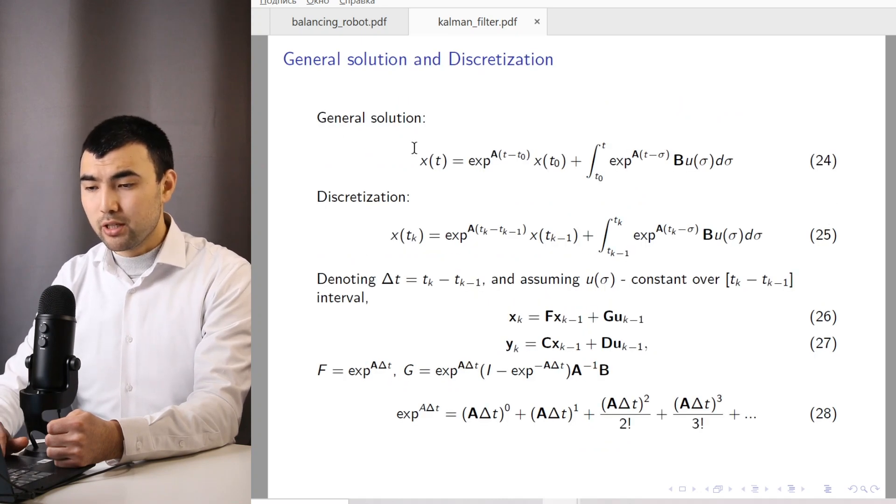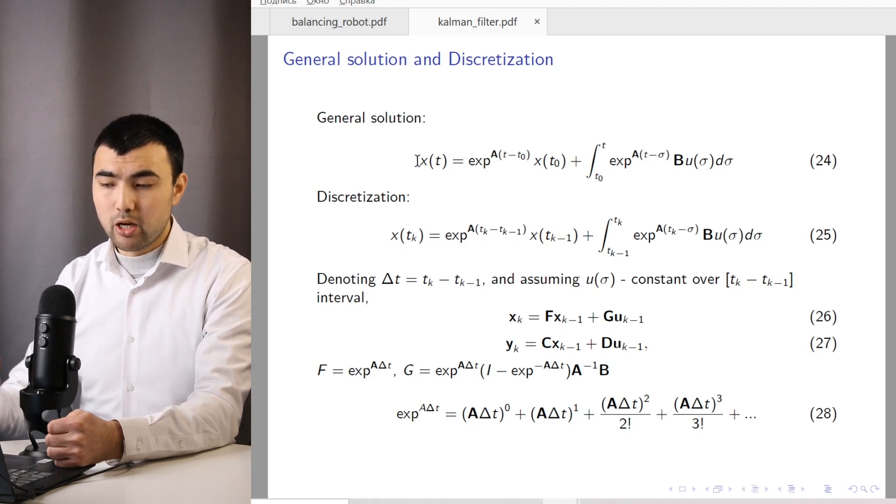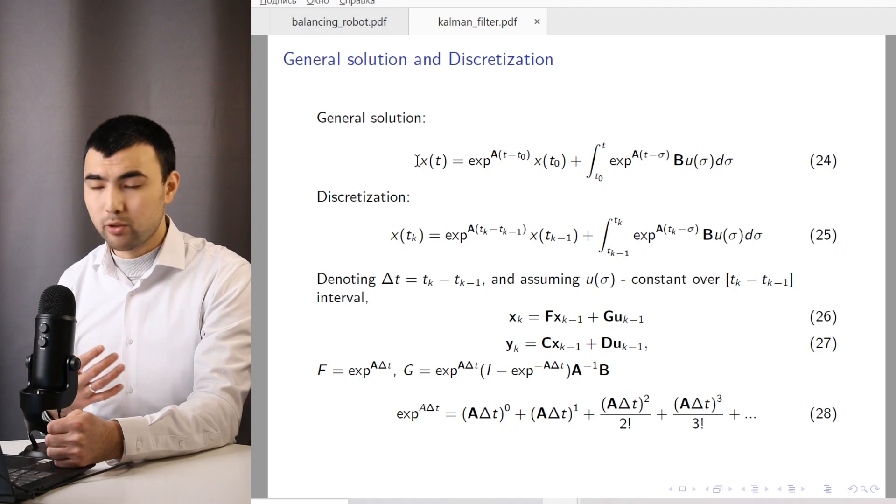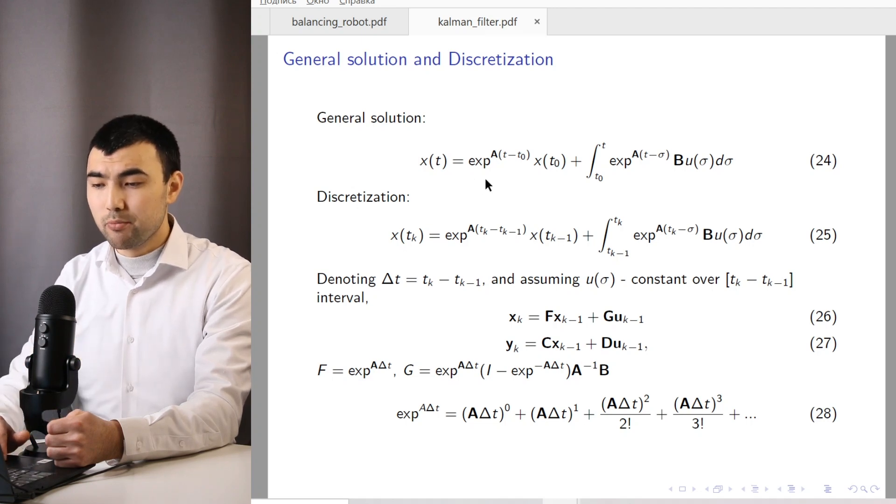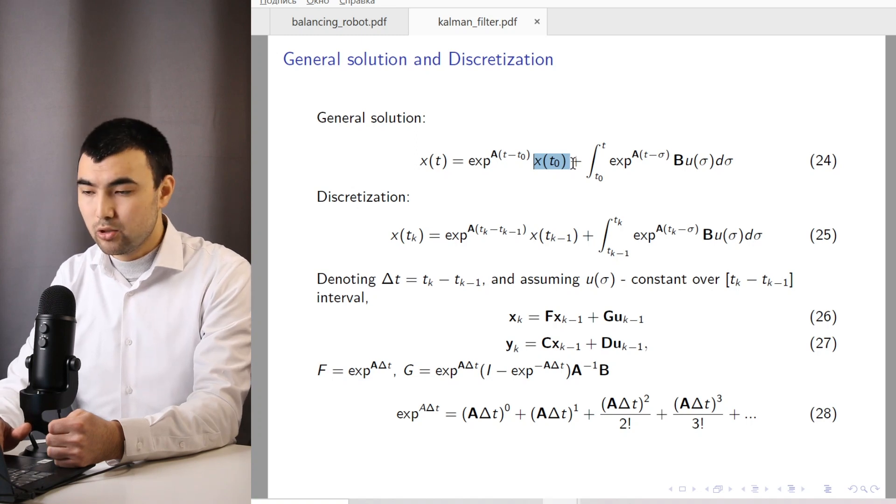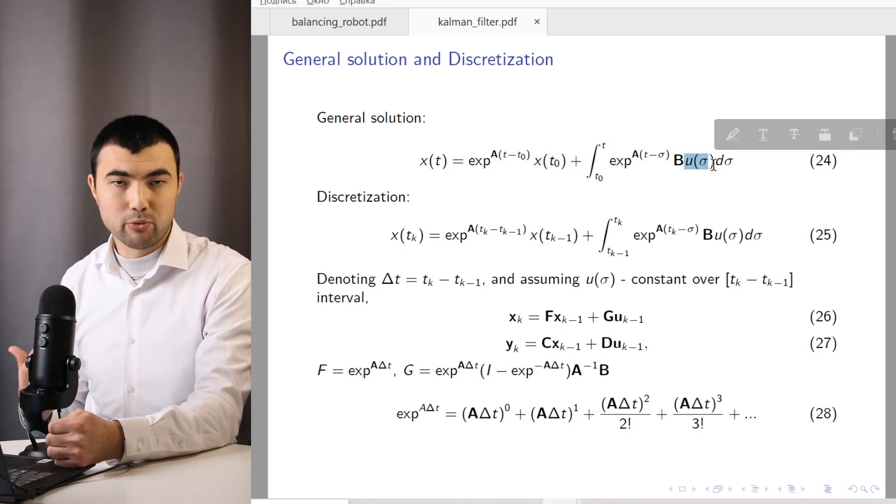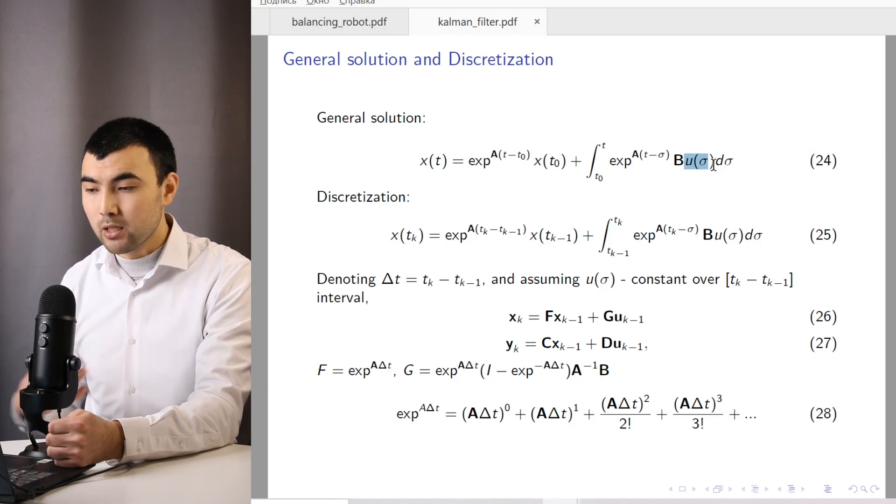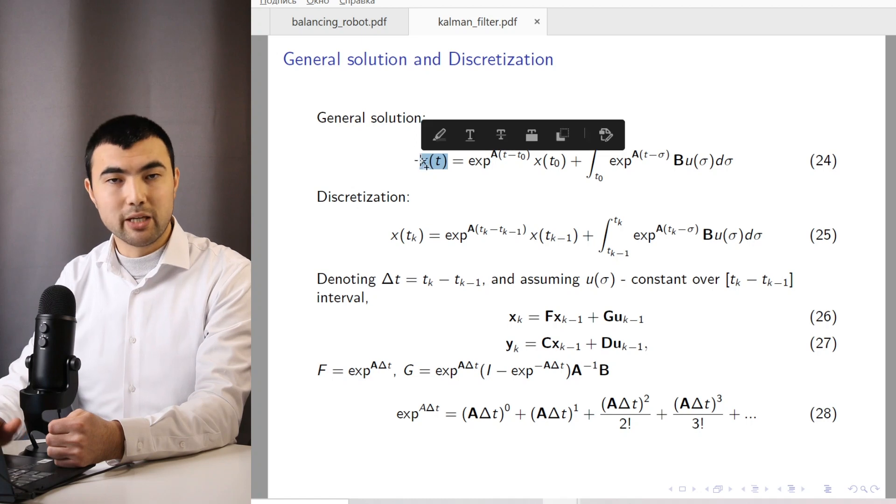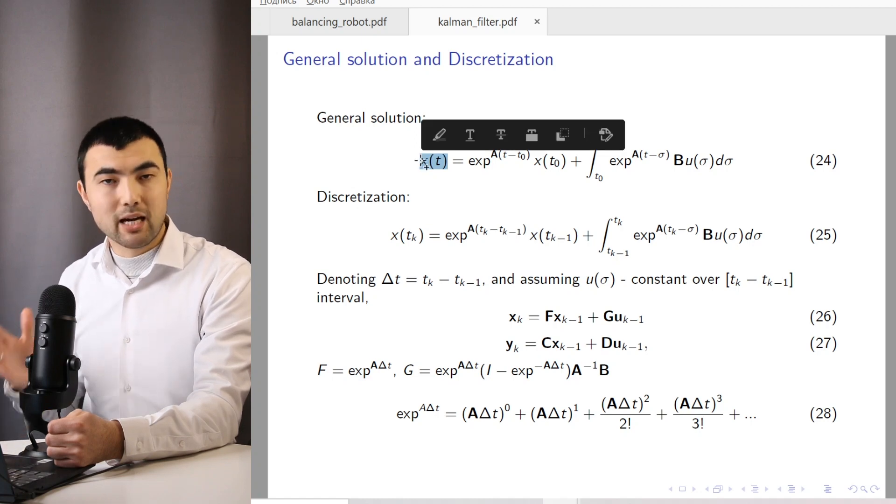So to extract the discrete form of these equations, I have to show the general solution of this state-space equation. So if you're encountering this equation for the first time, don't be afraid. What this equation means is basically if we know the initial values, x(t0), and if we know the inputs, and actually we know the inputs because we can control them, we can identify the state variables at any time instance.